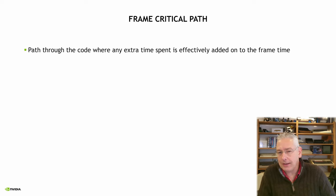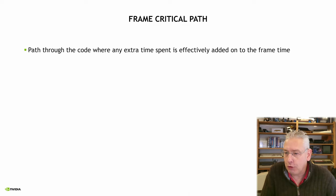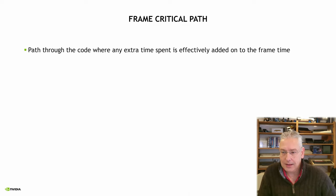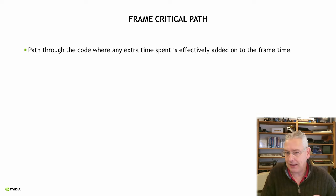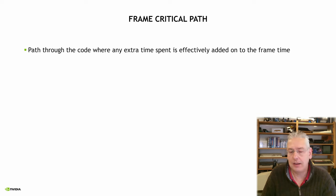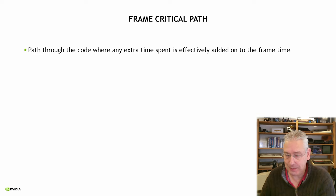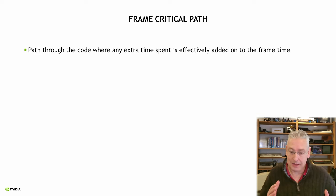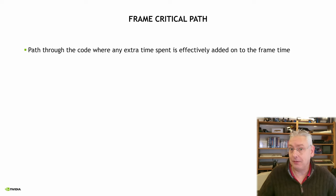I'm going to be talking about the frame's critical path. This is the path through the code where any additional time spent gets added onto the frame time. It doesn't necessarily mean a single thread — the critical path can jump between threads. Most of the time we want our critical path to be on the GPU. We want the CPU to complete the frame in less time than it takes for the GPU to render, so that the CPU ends up waiting for the GPU.